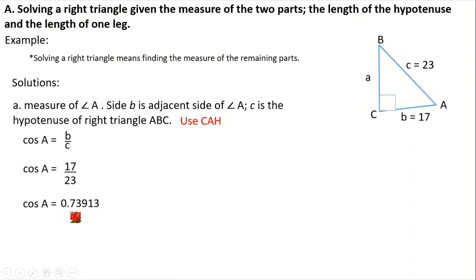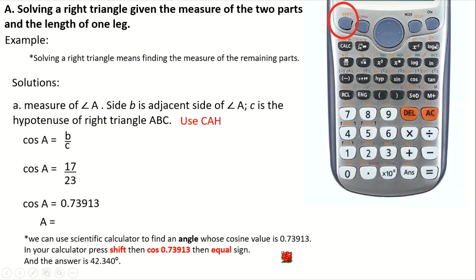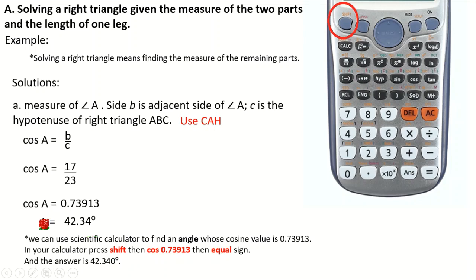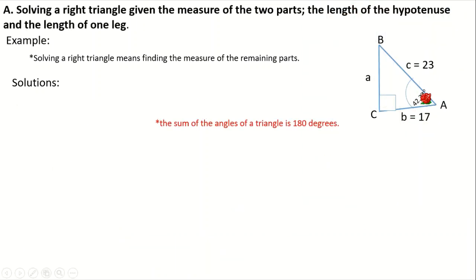As you can see, it's not yet in degrees because we're dividing the sides. To convert it to degrees, since we're looking for angle A, you can use a scientific calculator. Make sure it's in degree mode. Press the shift button, then press cosine, then enter 0.73913, and press the equal sign. The result will be 42.34 degrees. Therefore, angle A is 42.34 degrees.